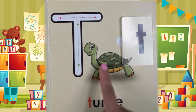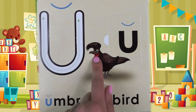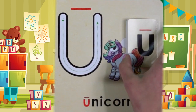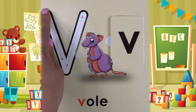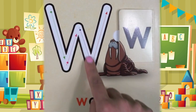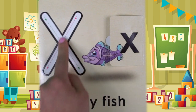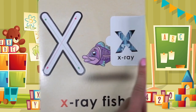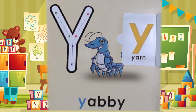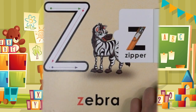Its name is T, its sound is T. Turtle starts with T and tie starts with T. Its name is U, its sound is U. Unicorn starts with U and ukulele starts with U. Its name is V, V says V. Violin starts with V and velvet starts with V. Its name is W, W says W. Walrus starts with W and wood starts with W. Its name is X, X says X. X-ray fish starts with X and X-ray starts with X. Its name is Y, Y says Y. Yabby starts with Y and yarn starts with Y. Its name is Z, Z says Z. Zebra starts with Z and zipper starts with Z.